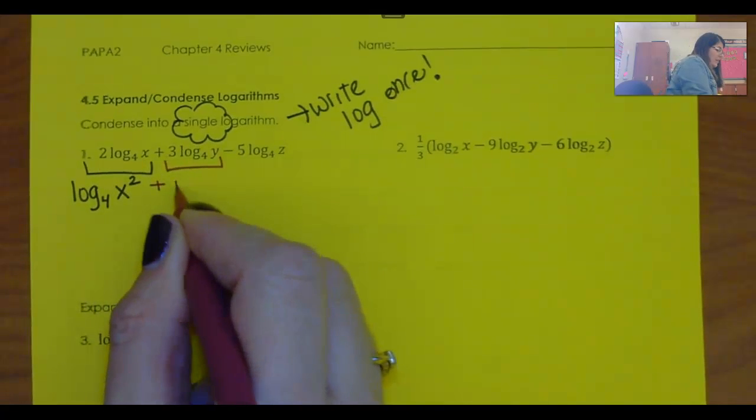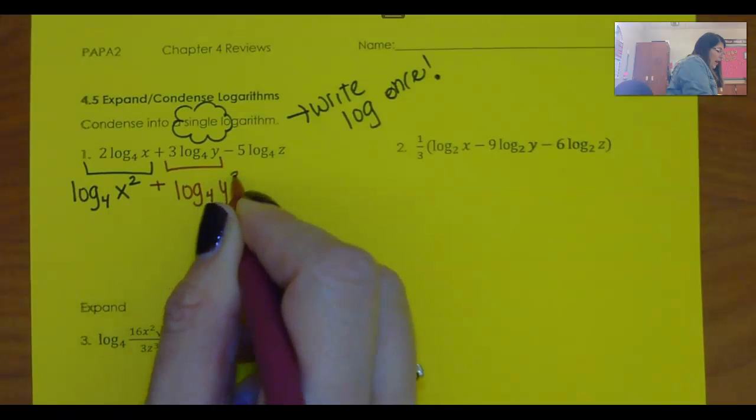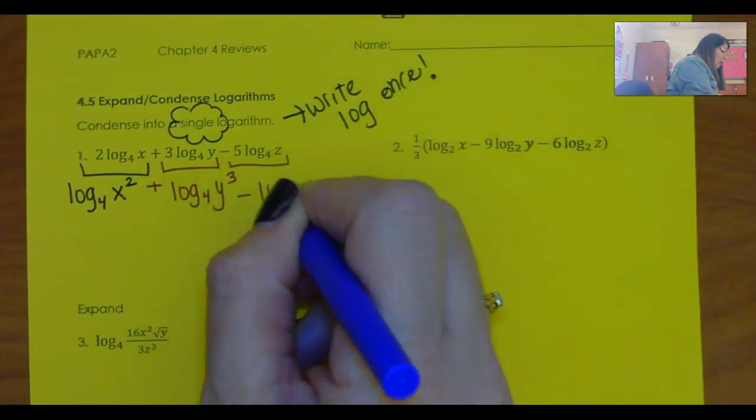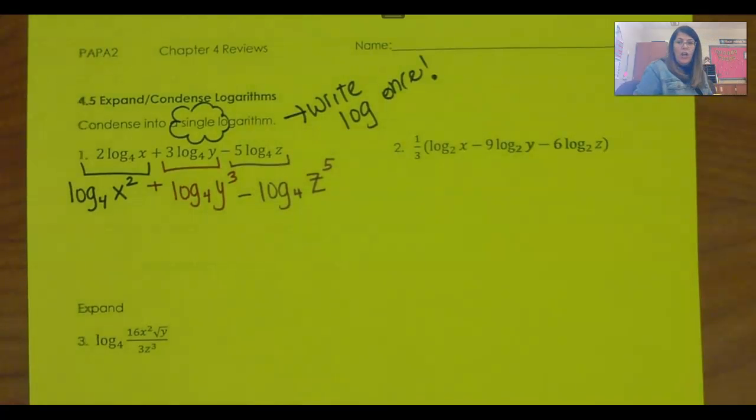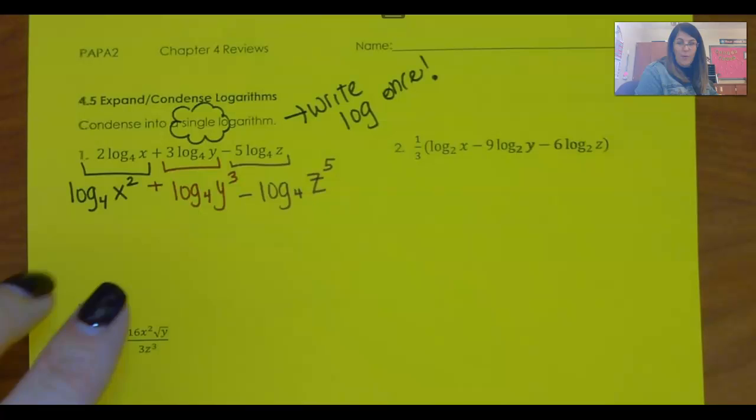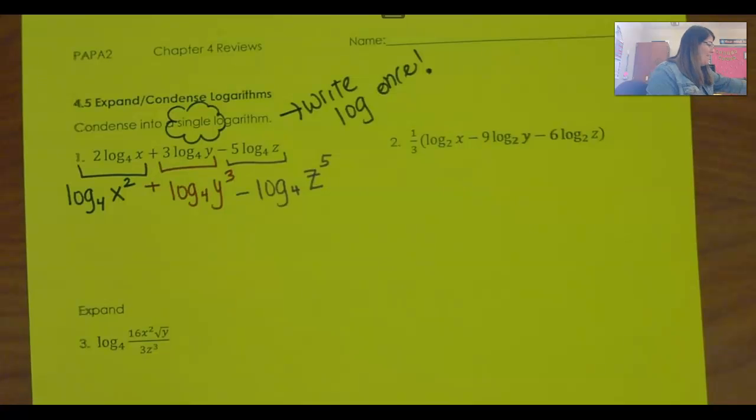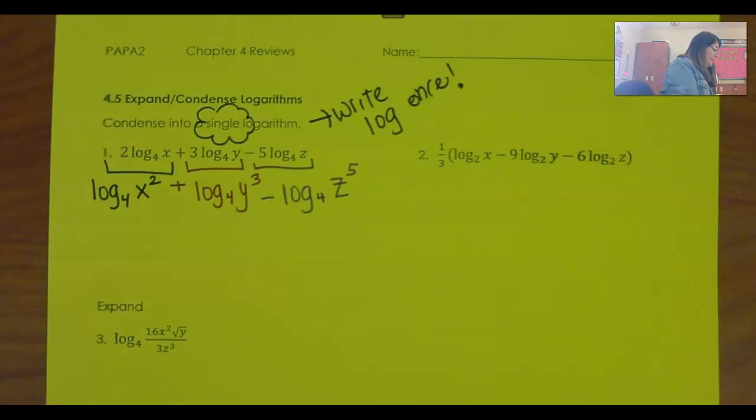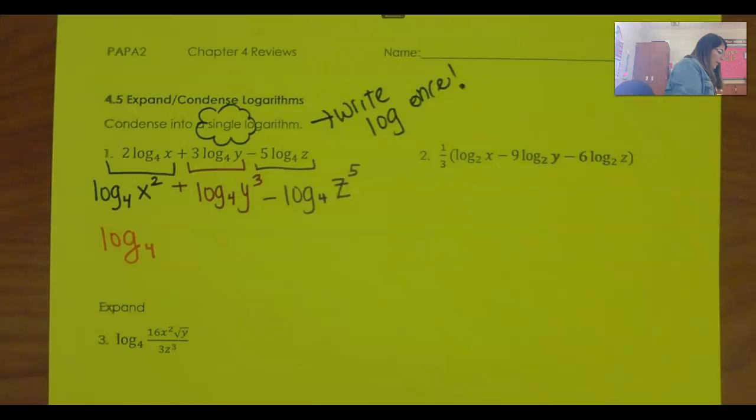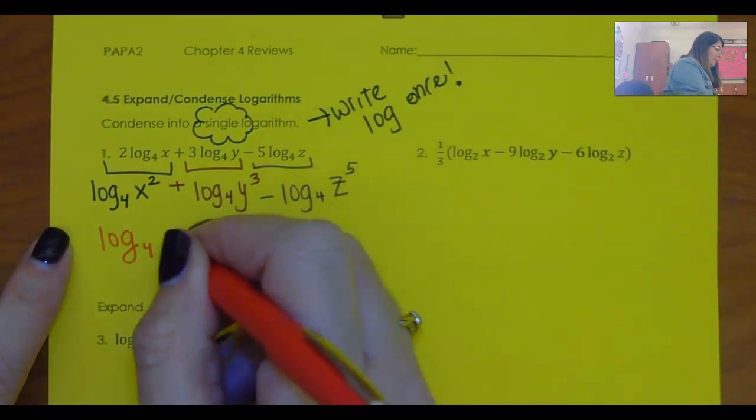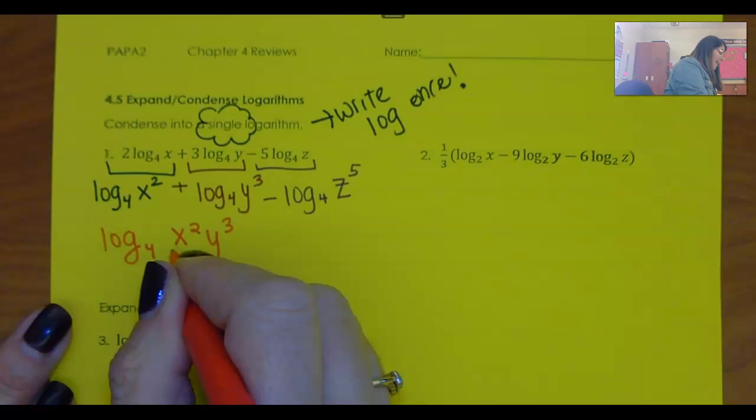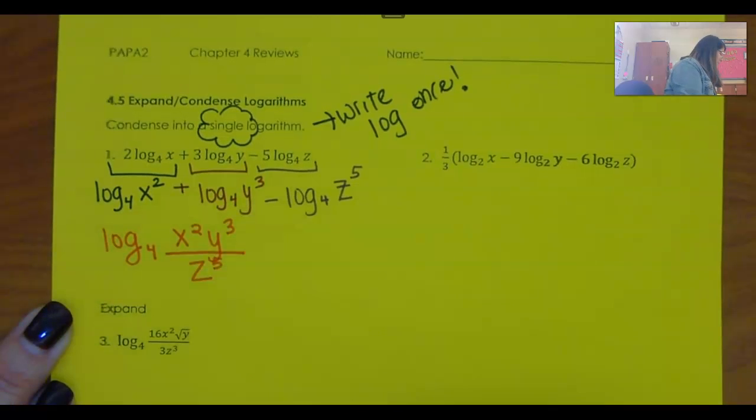This is the log base 4 of y cubed. And this last one is minus log base 4 of z to the 5. Now, these things, putting them together now with the adding being multiplying and the subtracting being divided, it doesn't work if they are not the same base. All of these are base 4, so it's okay. So this is going to become the log base 4. This adding means I can multiply that, so I've got x squared y cubed. This subtracting means I divide, so all of that over z to the 5th.